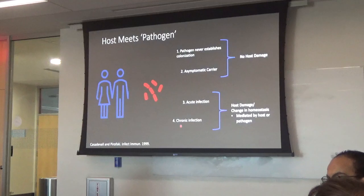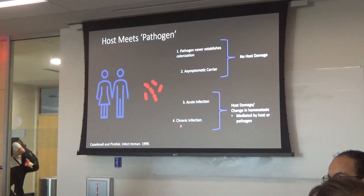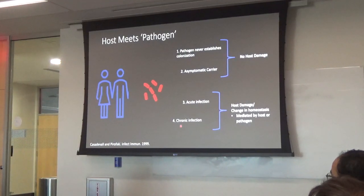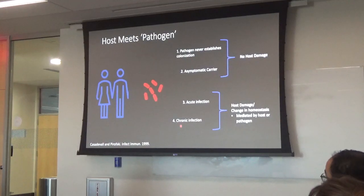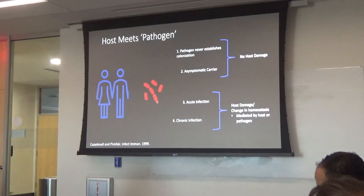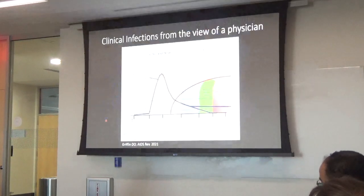Things like tuberculosis or syphilis are examples of chronic infection. What I want to impress is that host damage or changes in homeostasis sometimes come from the bug itself, but sometimes they come from our own immune system.